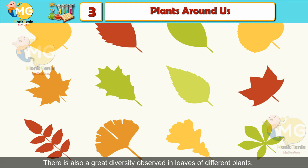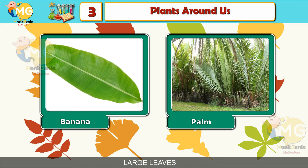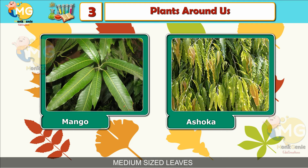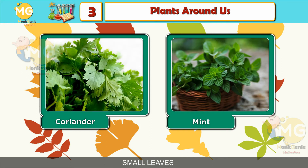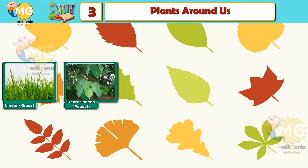Leaves can be large, medium, or small sized. Banana and palm have large leaves; mango and ashoka have medium-sized leaves; coriander and mint have small leaves. Leaves are also of different shapes — linear like grass, heart-shaped like peepal, oval like guava.